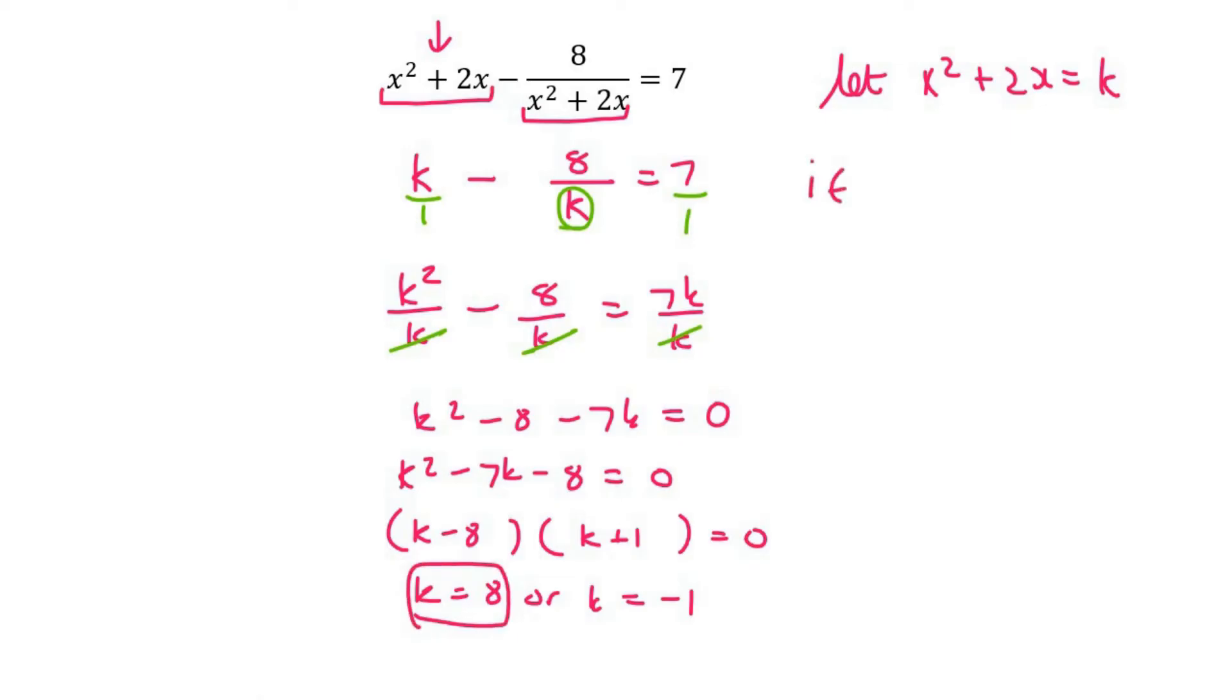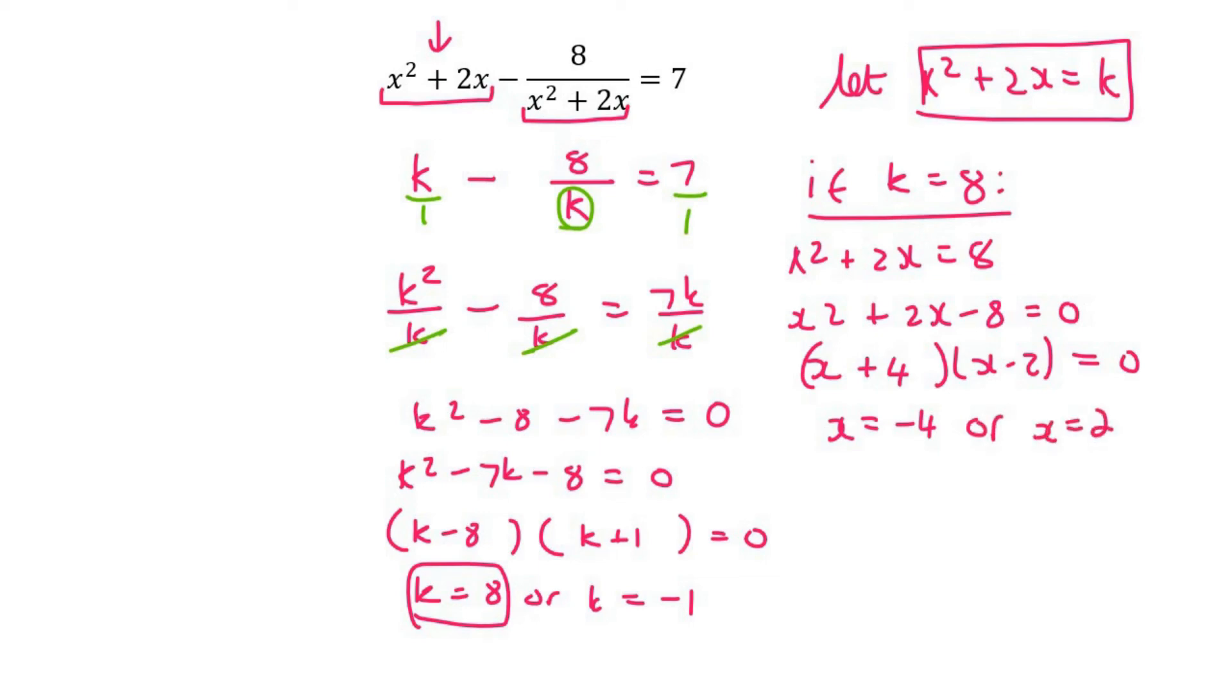So we can say here if k equals 8, then what we do is we use this and we will say x squared plus 2x equals 8. Now we solve for x. So x squared plus 2x minus 8 and this can be factorized as x plus 4 and x minus 2. And so if you had to solve that, you'd get x is equal to minus 4 or x equals 2.